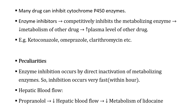Next is enzyme inhibition. Many drugs can inhibit cytochrome P450 enzymes. Enzyme inhibitors competitively inhibit the metabolizing enzyme — this decreases metabolism of other drugs and increases their plasma levels. Enzyme inhibition by drugs is the basis of several drug interactions. Examples are ketoconazole, omeprazole, clarithromycin, etc.